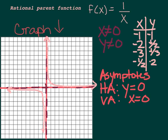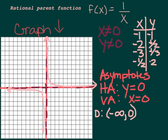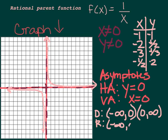We can also talk about the domain and range. I prefer domain and range written in interval notation. The domain is negative infinity until it hits the asymptote at 0 — soft bracket because it doesn't touch — and then it picks right up again after 0 and continues to infinity. The range is the same thing: negative infinity to 0 and 0 to infinity.